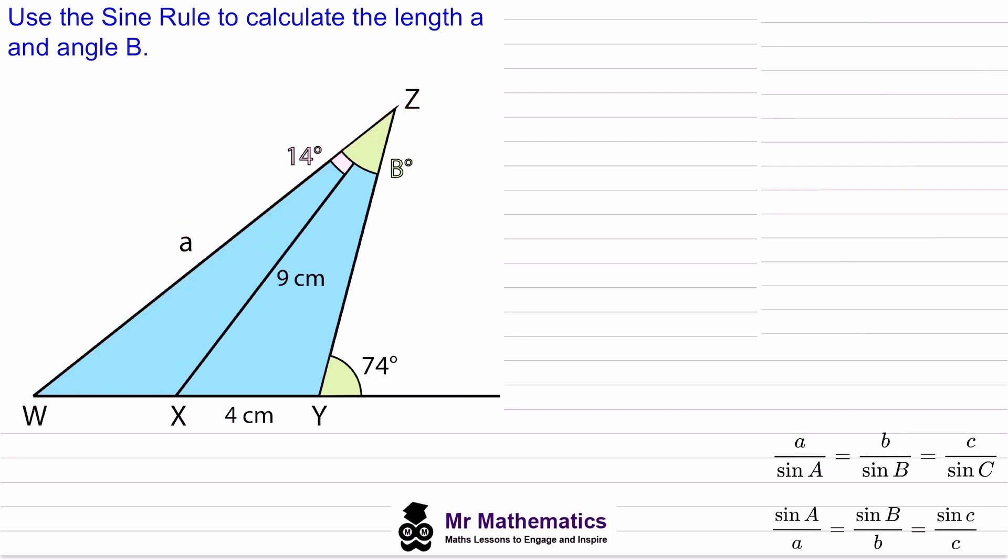So to begin with when we use the sine rule we need to find a matching pair of angle and length. Because we have this length here Z to X which is nine centimeters, we need to work out the opposite angle which is this angle here and we can see that this angle lies along a straight line with the 74 degrees.